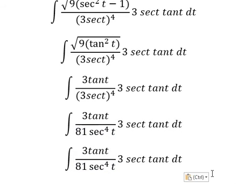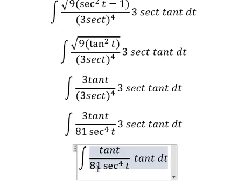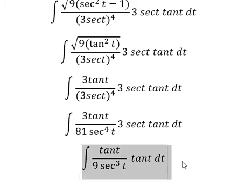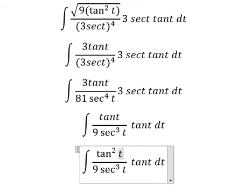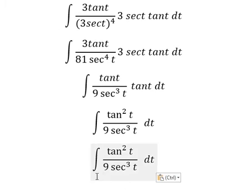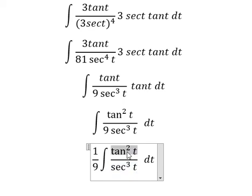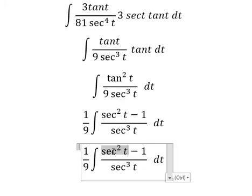Now we simplify by canceling nine secant t from numerator and denominator. We have tan t times tan t, giving tan squared t. Then we substitute tan squared t with secant squared t minus one, and divide accordingly.